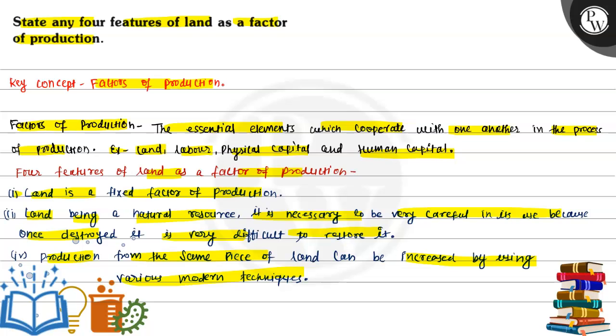So these were the four features of land as a factor of production. I hope you understood it well. Thank you, all the best.